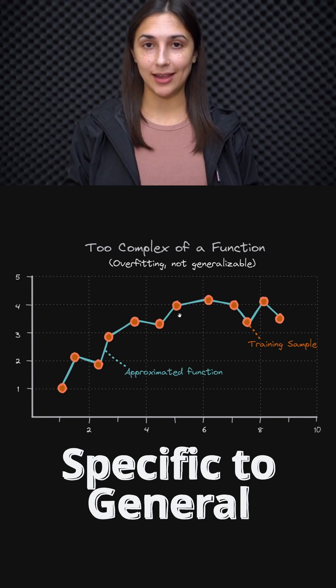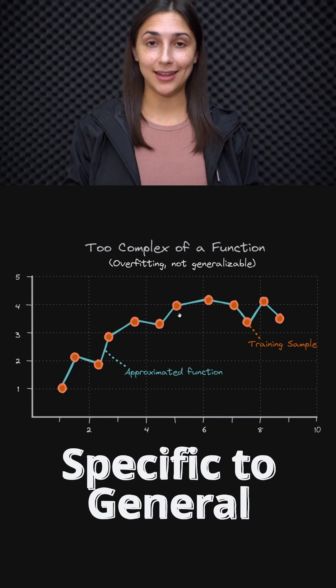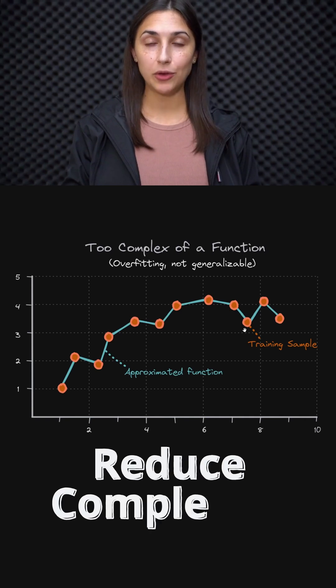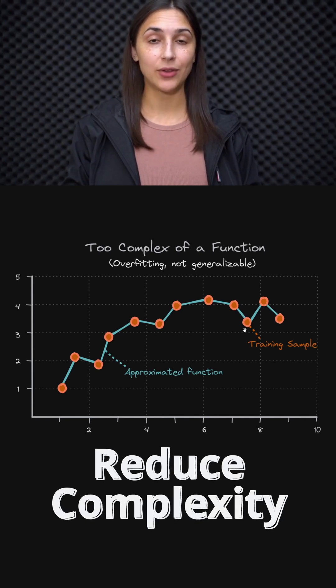Therefore, the model has overfit the training set and is not going to perform well on data not contained in the training set. One technique here is to reduce the model complexity so that it doesn't fit the training set so specifically and has room to fit data outside of the training set as well.